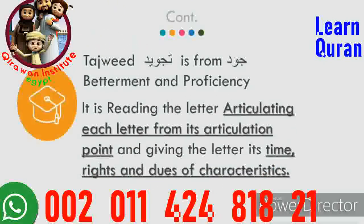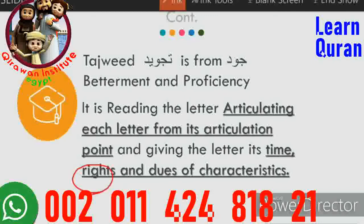The word 'tajweed' in Arabic comes from the root letters j-w-d, meaning betterment and proficiency. The applied definition of tajweed is: reading each letter by articulating it from its proper articulation point, giving the letter its proper timing, and giving the letter its rights of characteristics. The rights of letters are qualities that are fixed to the letter — for example, the letter sad is heavy and the letter lam is light.